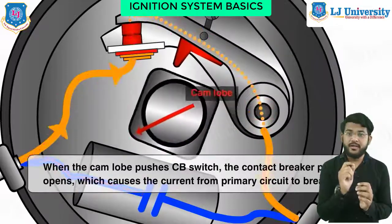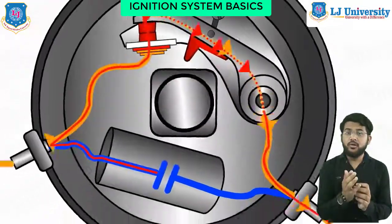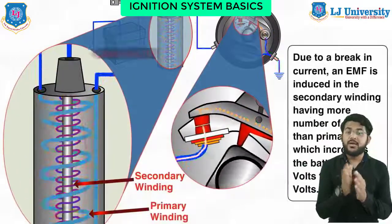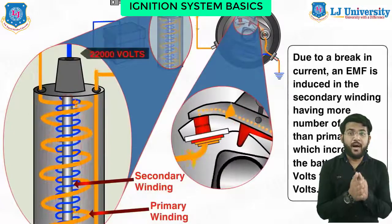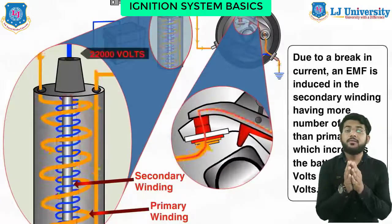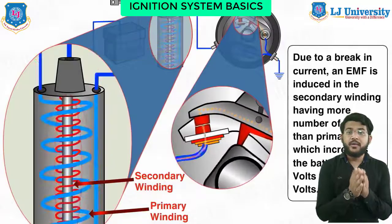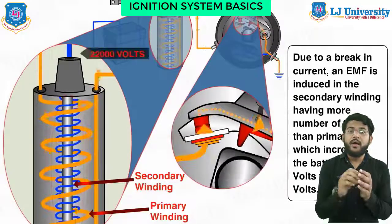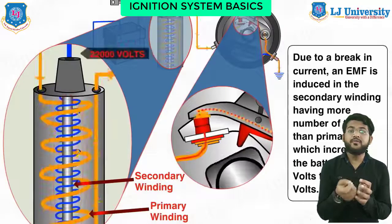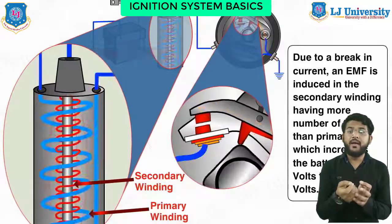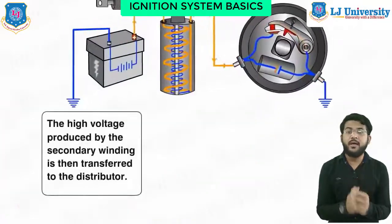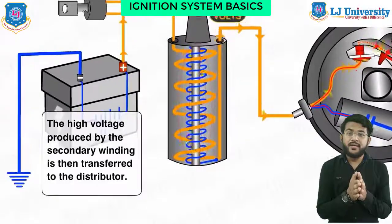There are four cycles of operation: suction, compression, power generation, and exhaust. These operations are performed either during two strokes of the piston or during four strokes of the piston, and accordingly the engines are called two-stroke cycle engines and four-stroke cycle engines.